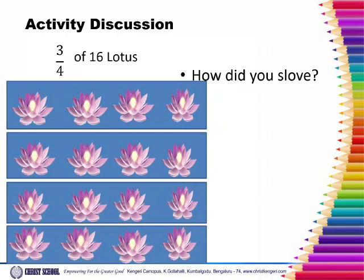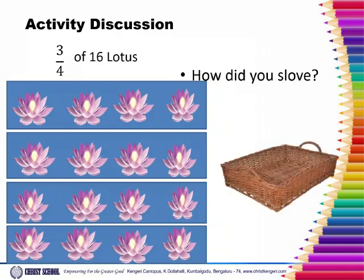What fraction of lotus did she give to her friend? 3 by 4. The fraction is 3 by 4. That is, among the 4 groups, she decided to give 3 groups of lotus to her friend.